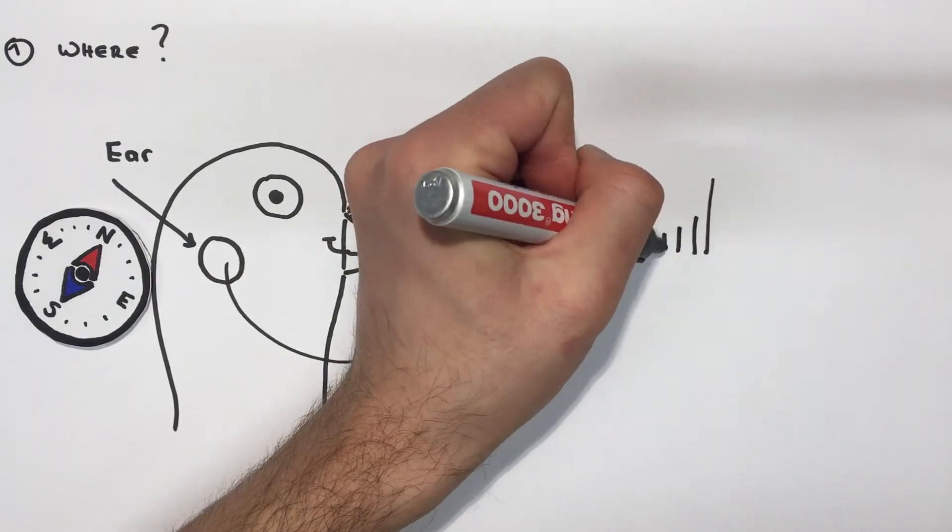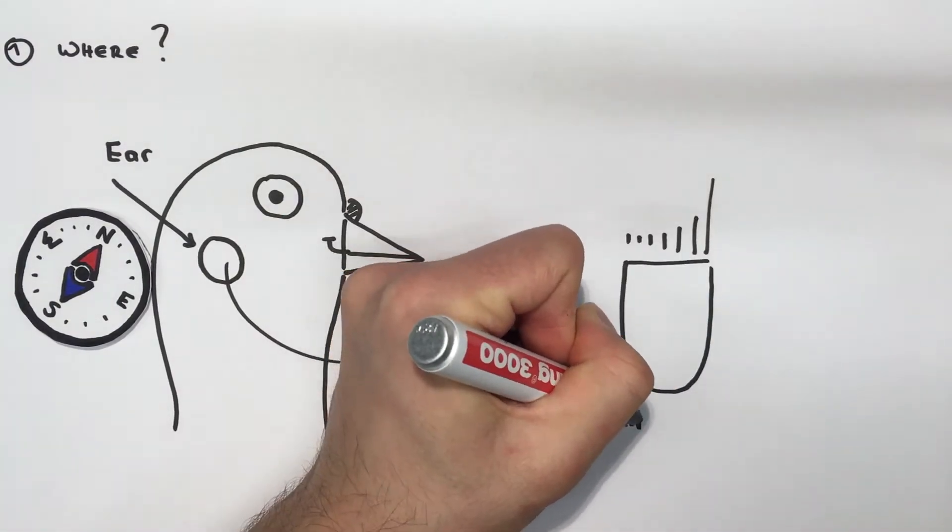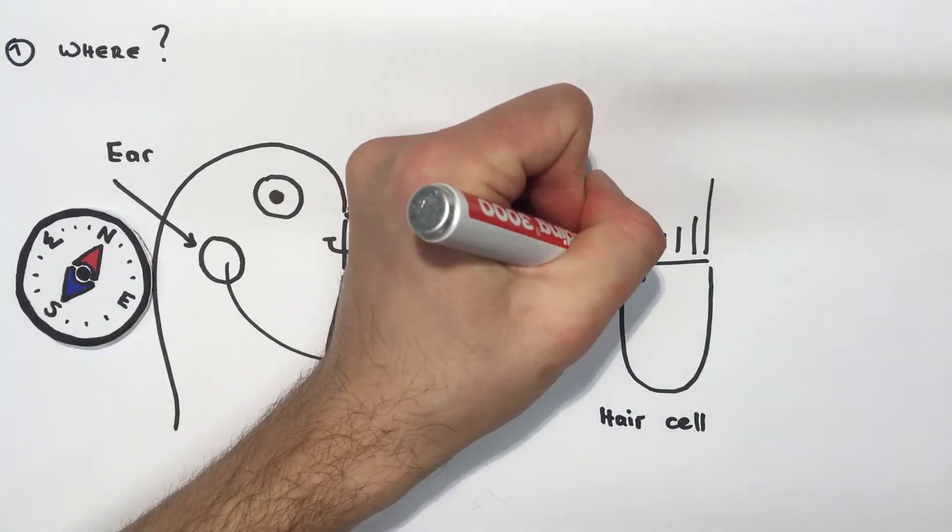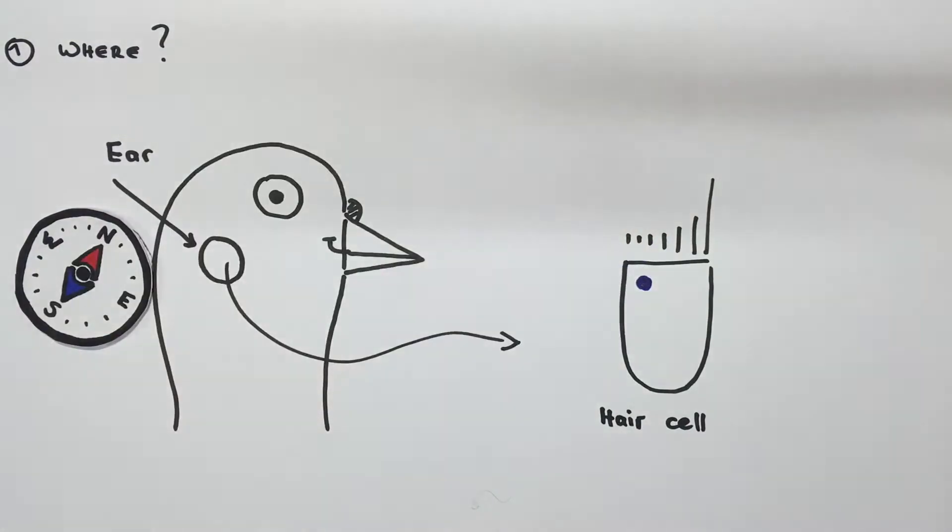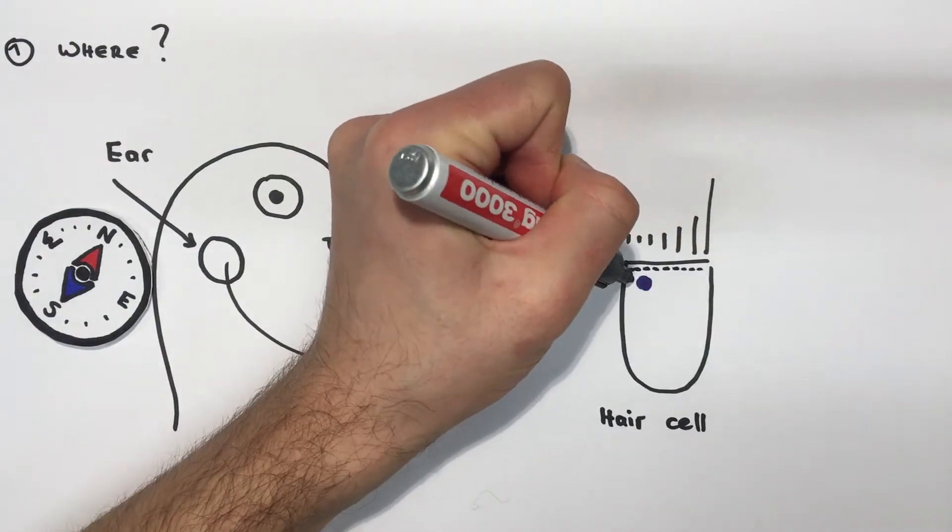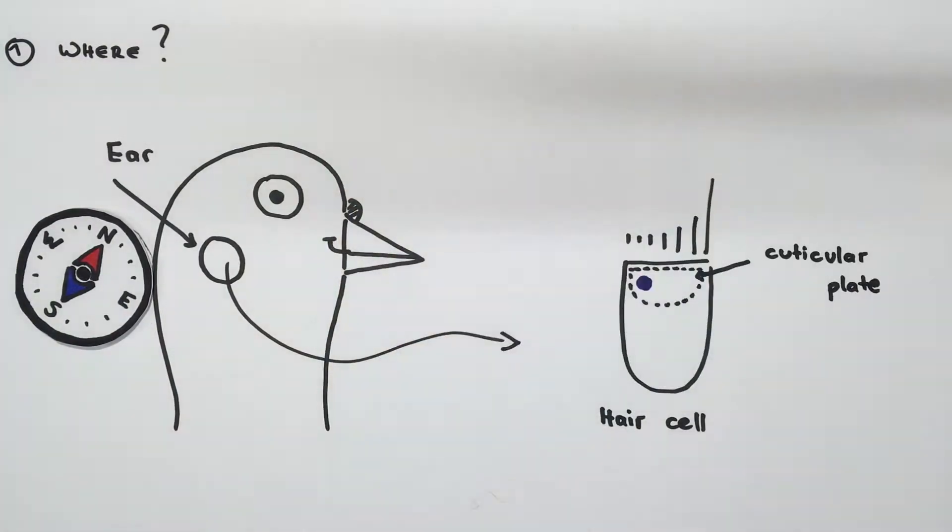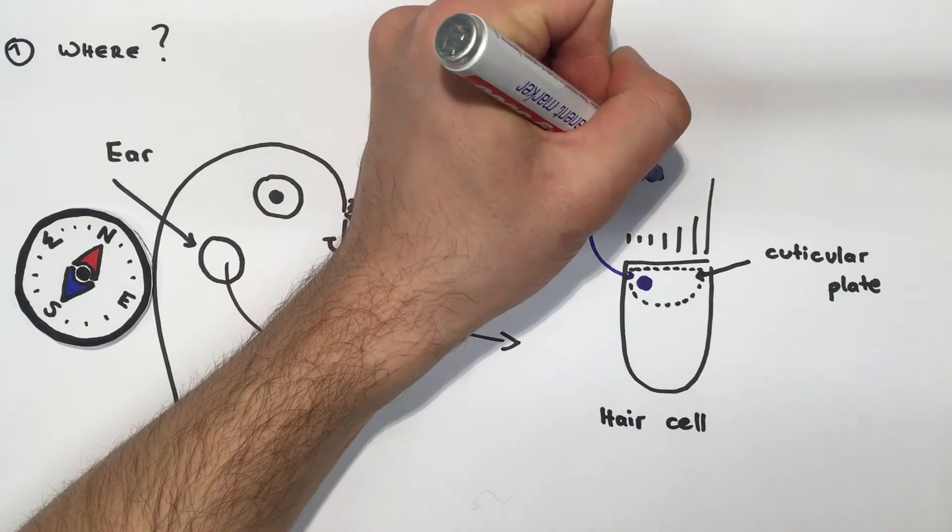Indeed, when our lab had a closer look at the sensory cells of the inner ear, so-called hair cells, we discovered a small round organelle made up of iron. Due to its specific location inside the cuticular plate of hair cells, this organelle was termed cuticulosome.